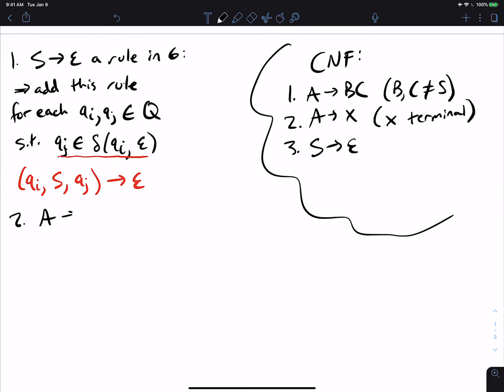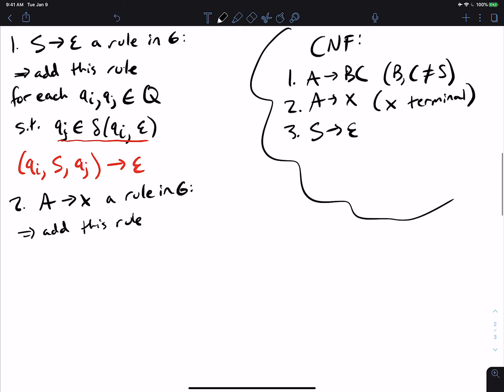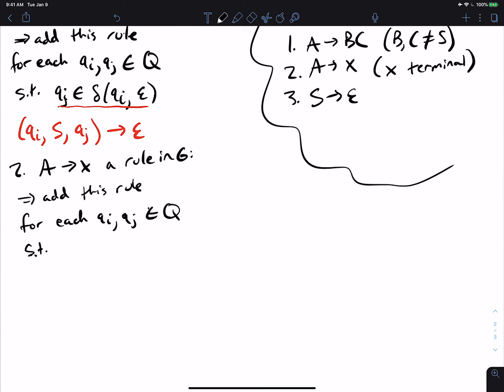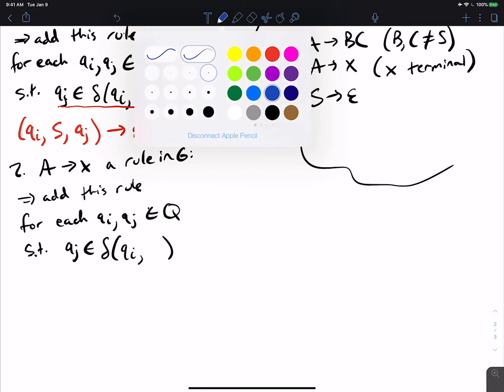So that's the easiest case, so let's do the A to X case. So if A to X is a rule in G, then we're going to add this rule. So it's going to be almost identical, so for each QI QJ in, I'll be more formal, in the set of states Q, such that now it's going to be a little different, such that QJ is reachable from QI on X this time. So it's not epsilon, maybe I'll change it to a different color.